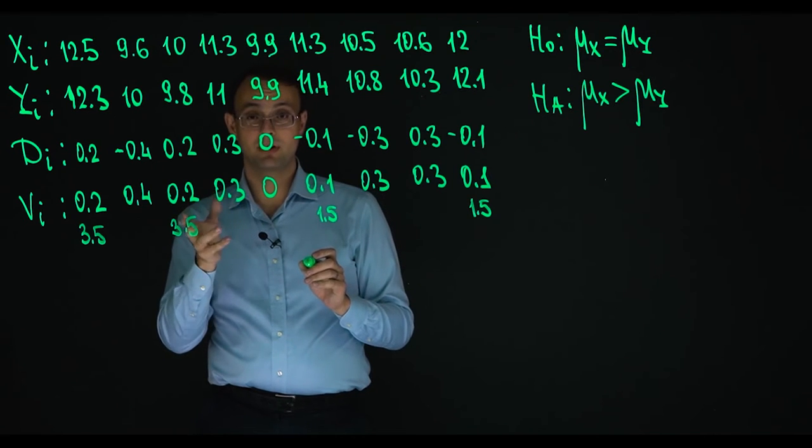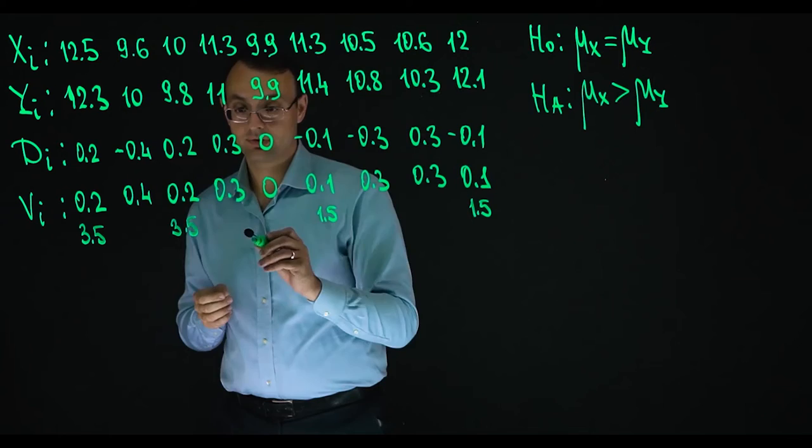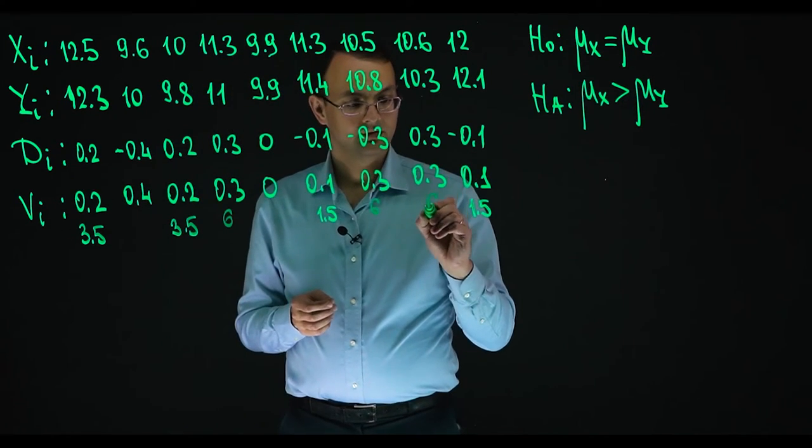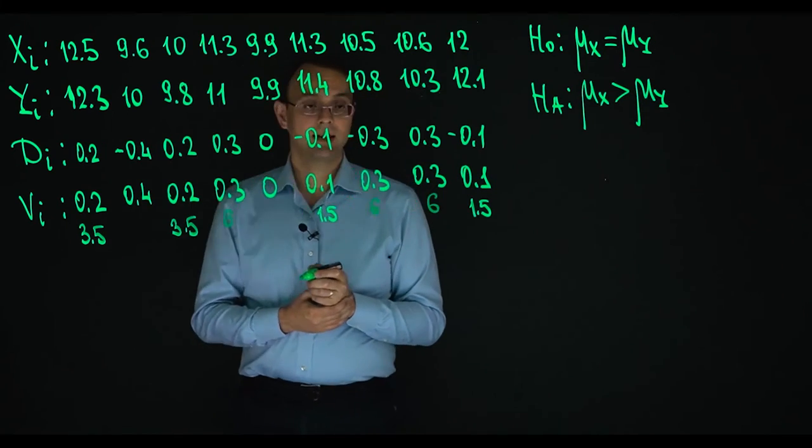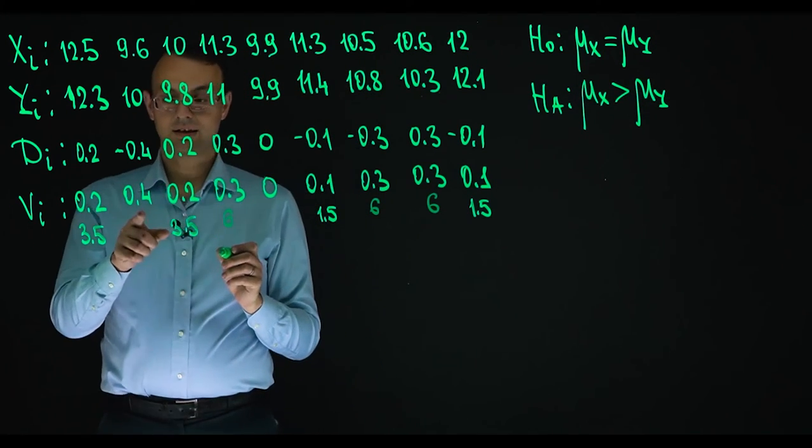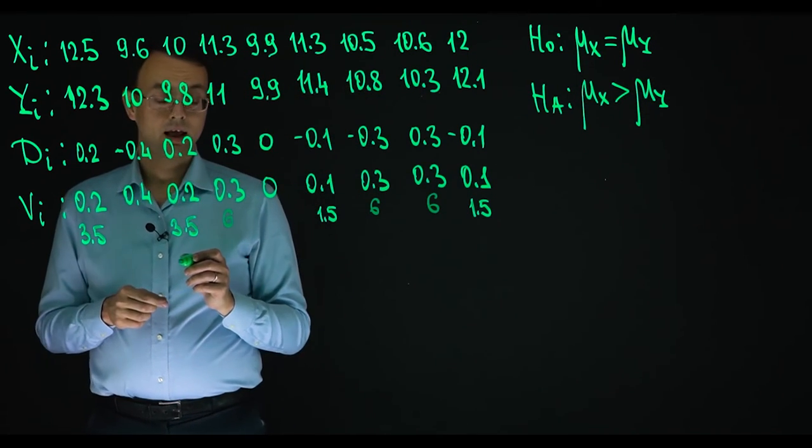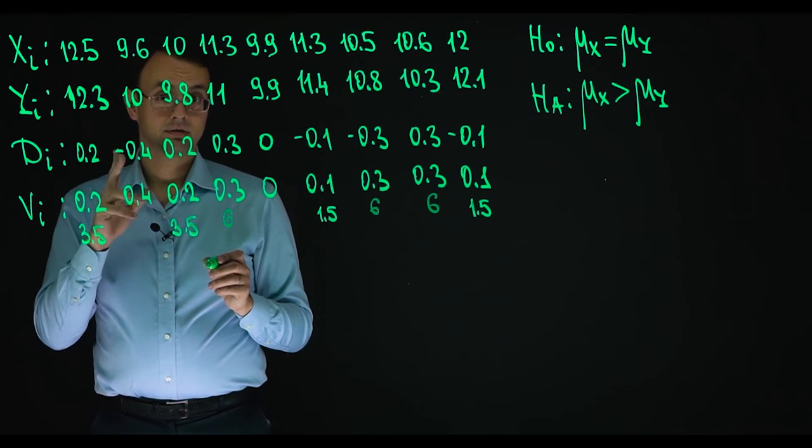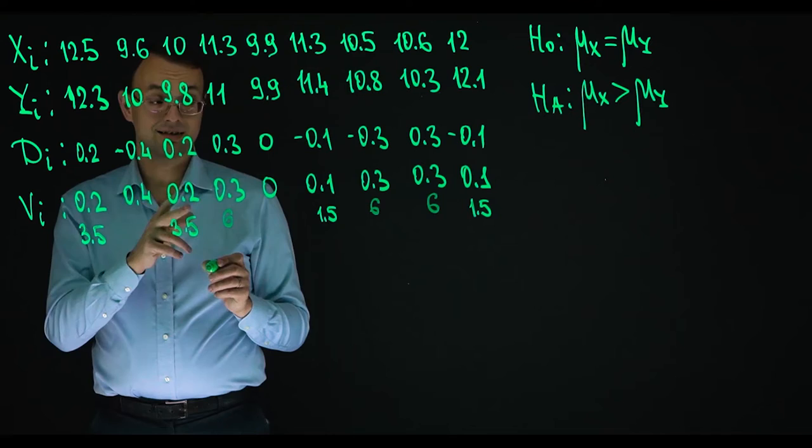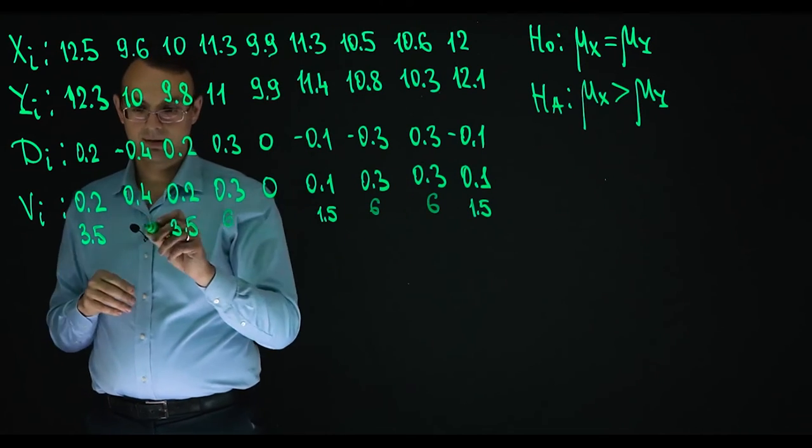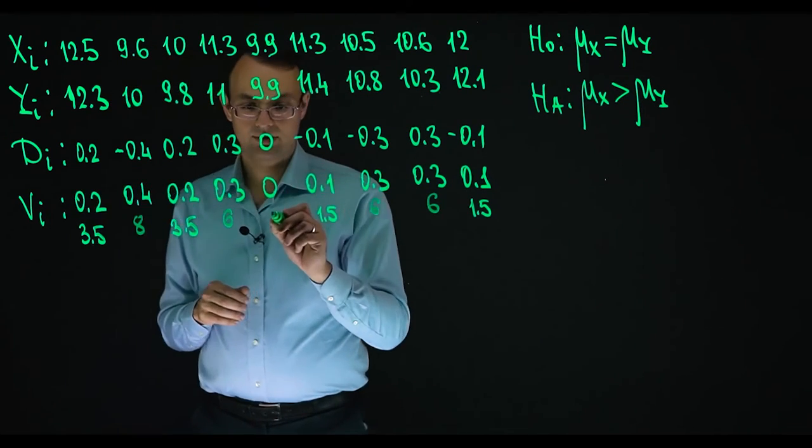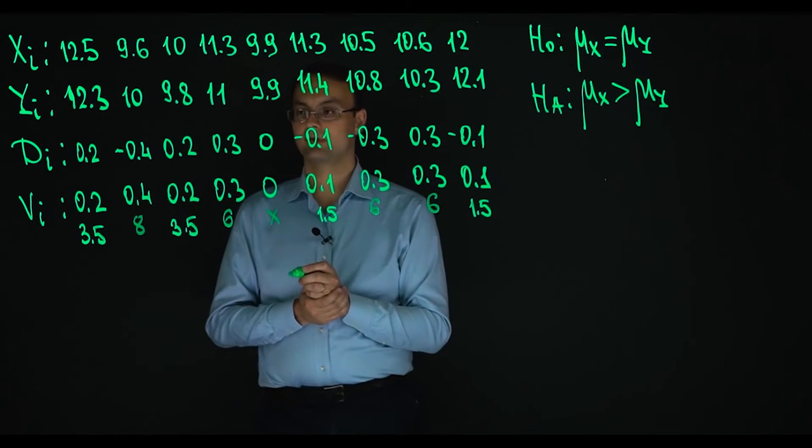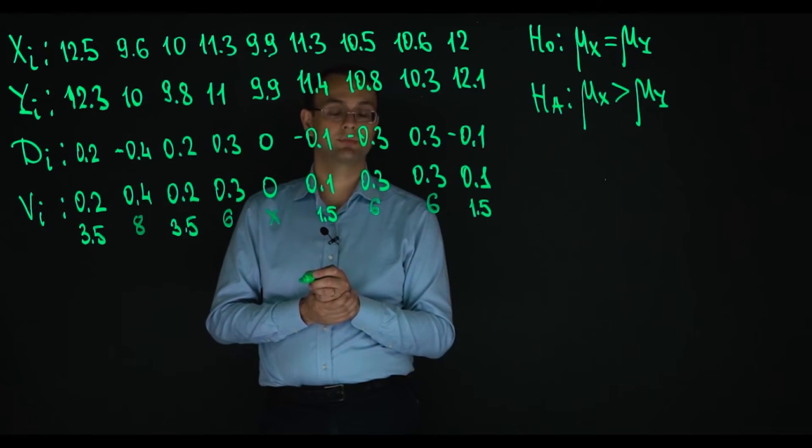And finally this one, its rank is 8. So places 5, 6 and 7 are already busy. And so its rank is 8. And this observation is not ranked as it is equal to 0. We are ranking only positive ones.